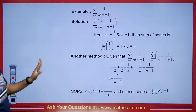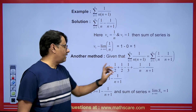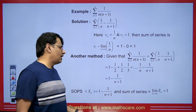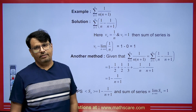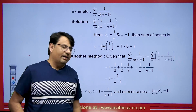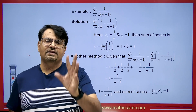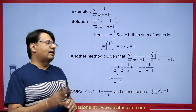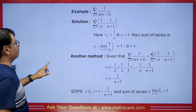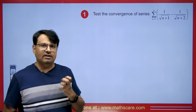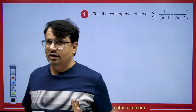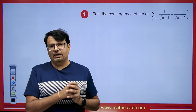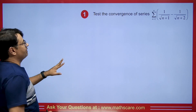This is also something important to understand: whenever the partial sums Sₙ are convergent and have a finite value, then the series is also convergent. Whenever we have a telescoping series, it always becomes convergent because its sequence of partial sums is convergent.